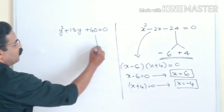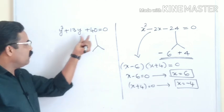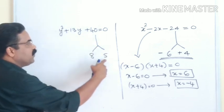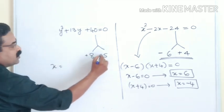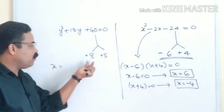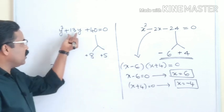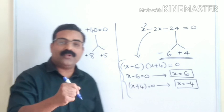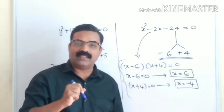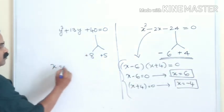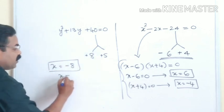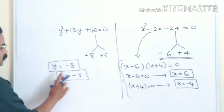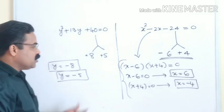Now for y² + 13y + 40 = 0, the number is 40. Split 40: 8 × 5 = 40 and 8 + 5 = 13. Both are positive, so y values are −8 and −5. Changing the sign: y = −8 and y = −5. This is how you easily find the value of the unknown quantity in quadratic equations.